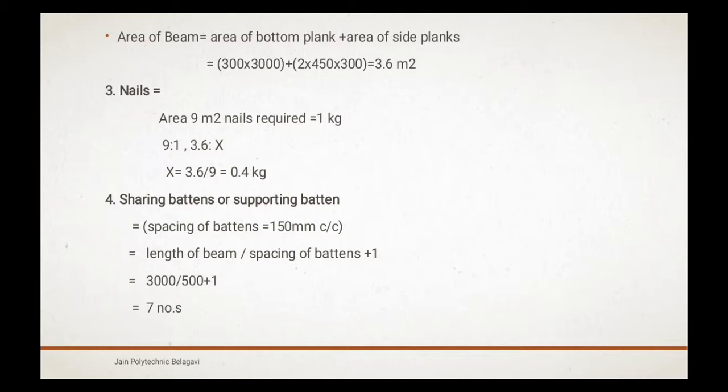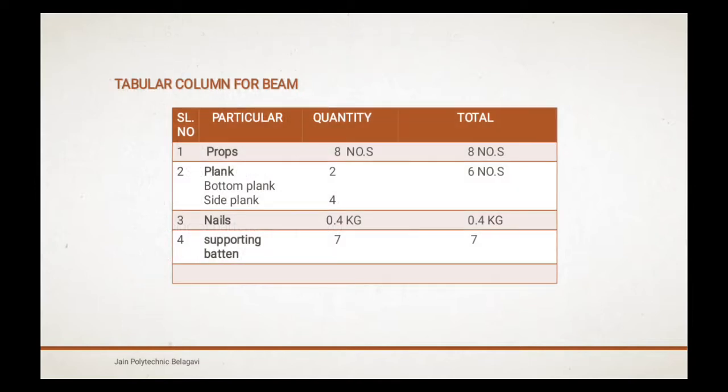This is a tabular column for a beam. Number, particular, quantity, total: props, 8 numbers; planks, bottom planks 2, side planks 4; nails, 0.4 kg; supporting batten, 7 numbers.